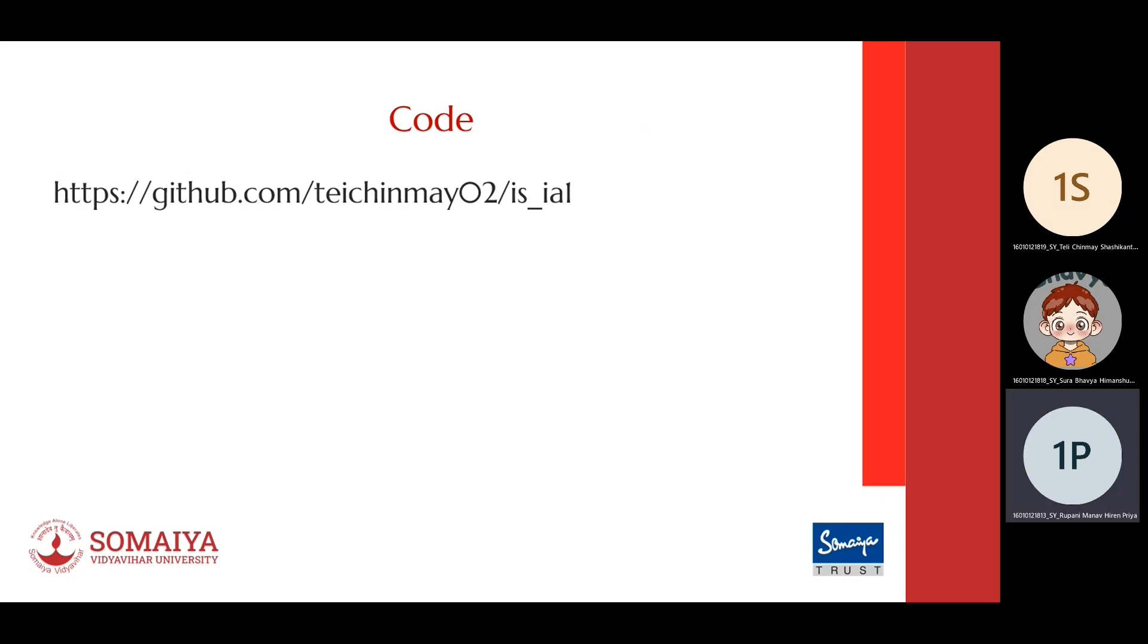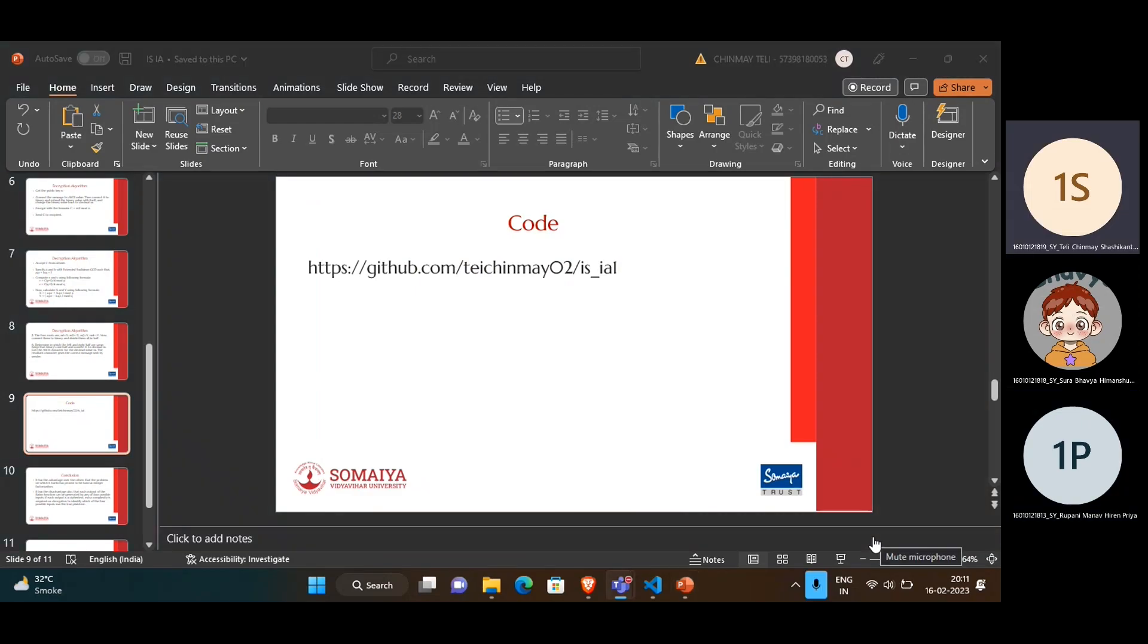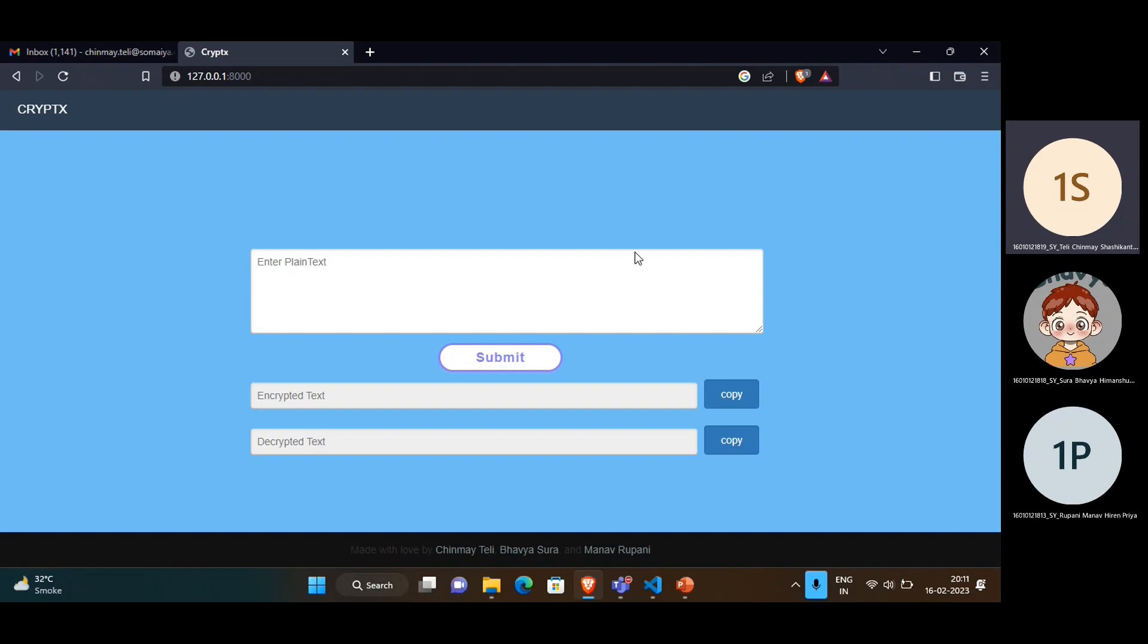Next, this is the GitHub repository link where our code is hosted. Let me demonstrate the implementation. This is the small module we have implemented for our IA. Here user will enter the plain text which is the text user wants to encrypt.